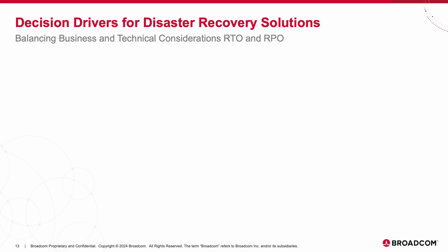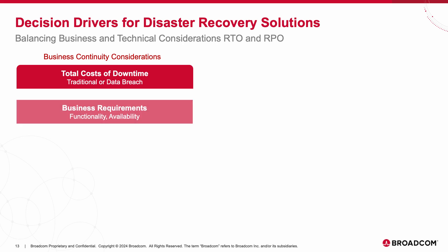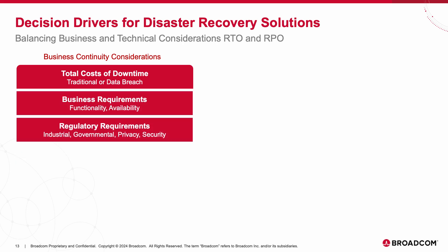Delving into the decision-driving factors when selecting business continuity and disaster recovery solutions, some key considerations come into play when crafting a BC plan. Total costs of downtime, which sheds light on the financial implications of downtime, whether stemming from traditional causes or data breaches. Business and regulatory requirements, which underscore the significance of meeting specific business needs, encompassing functionality, availability, and regulatory compliance. An example is the European Union's DORA, or Digital Operation Resiliency Act, which specifies recovery times that some technologies would be unable to meet.